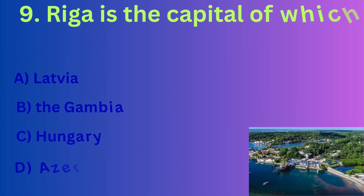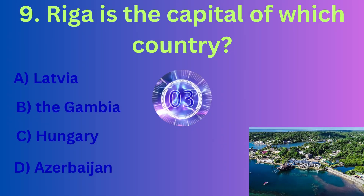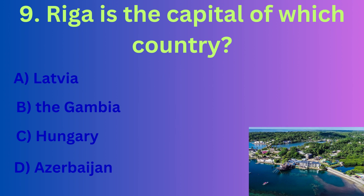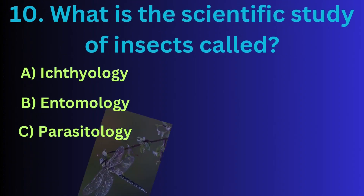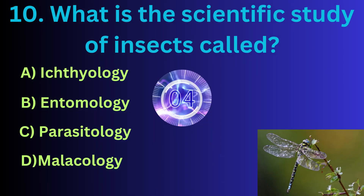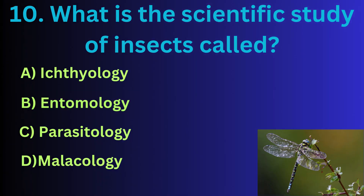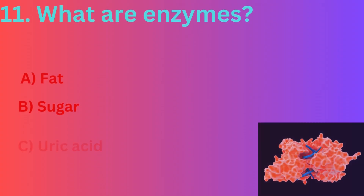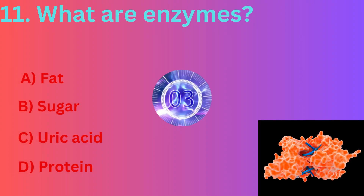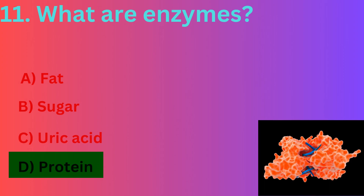Riga is the capital of which country? The correct answer is option A: Latvia. What is the scientific study of insects called? The correct answer is option B: Entomology. What are enzymes? The correct answer is option D: Protein.